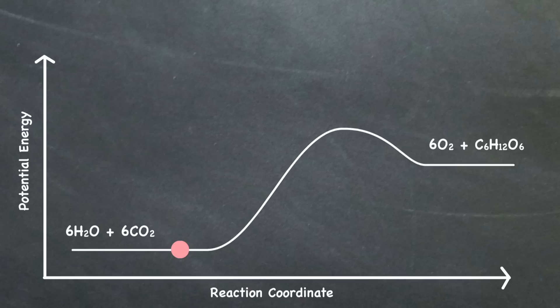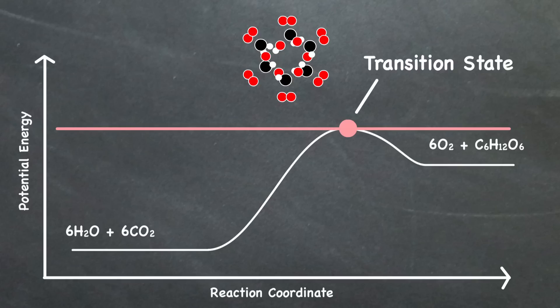Why? Let's take a look at chemical potential energy as we shift between the two sides of this equation. Here is the energy that these atoms have when they are just bonded as water and carbon dioxide. Using the energy of the sun, these atoms can be kicked into an arrangement called the transition state before settling into arrangements of glucose and oxygen.